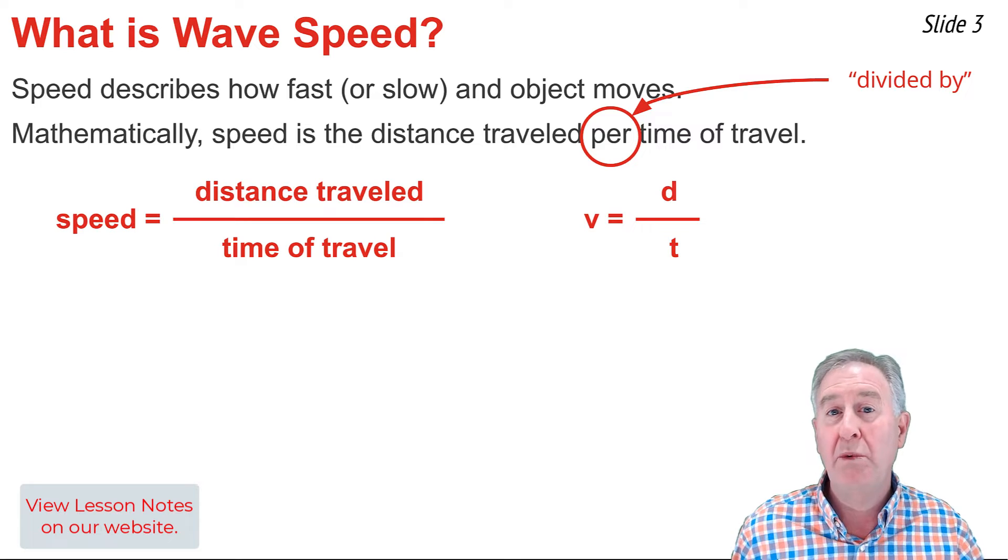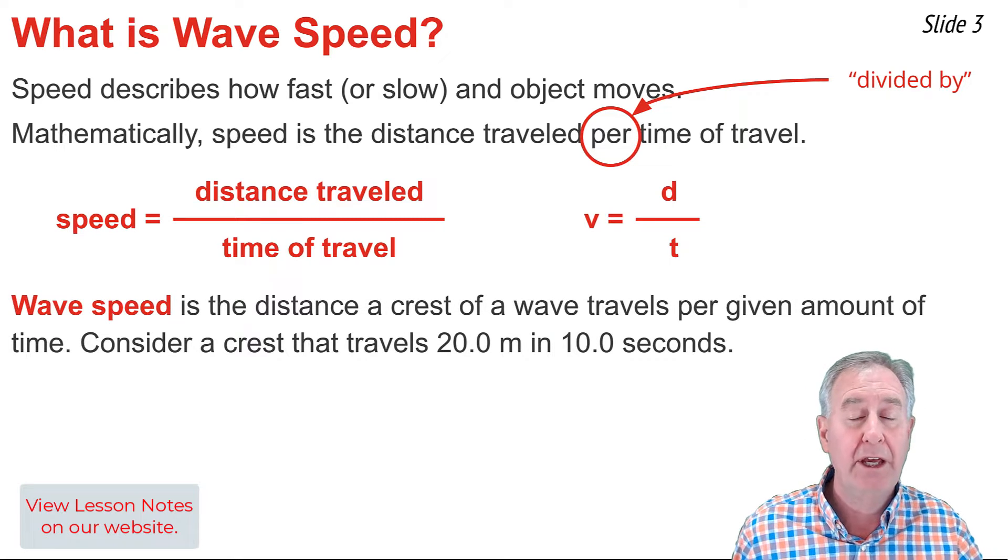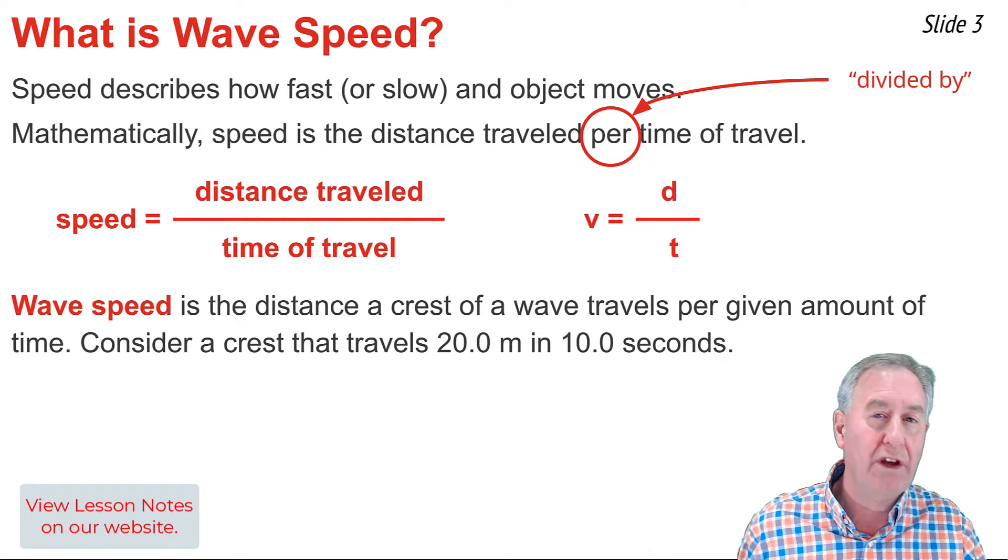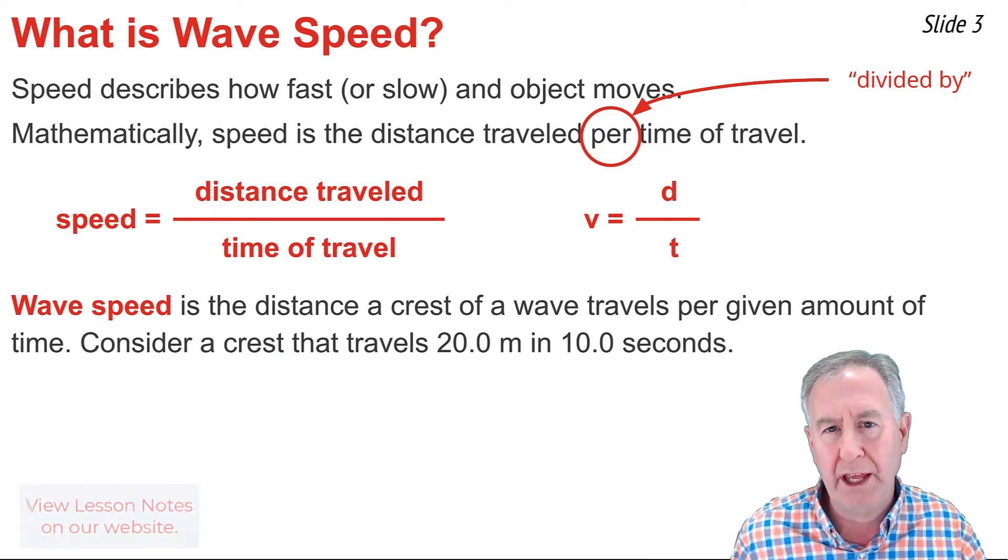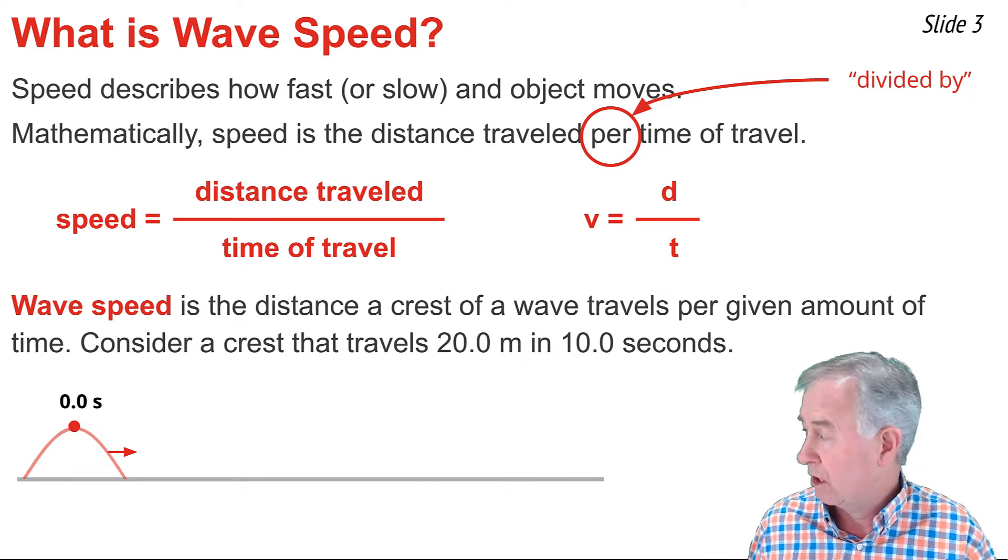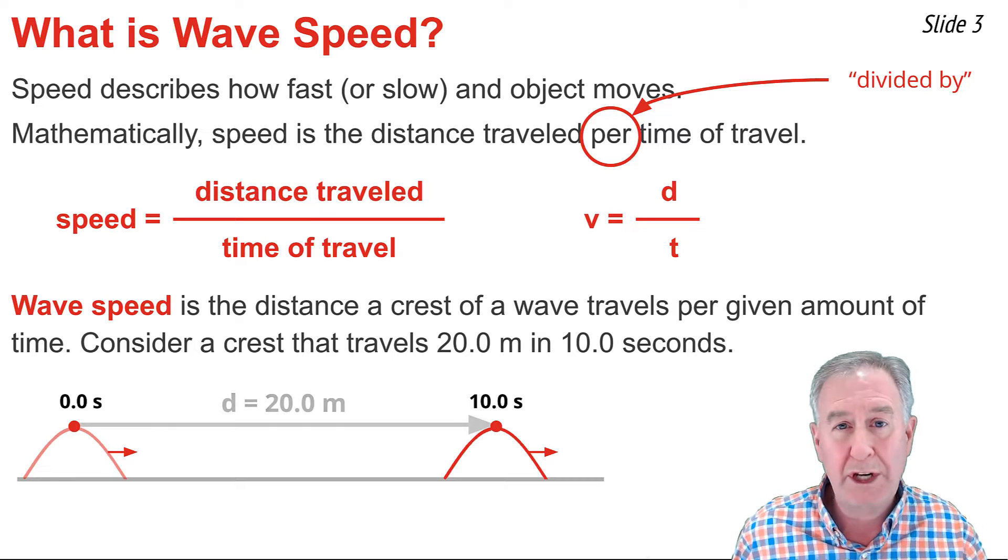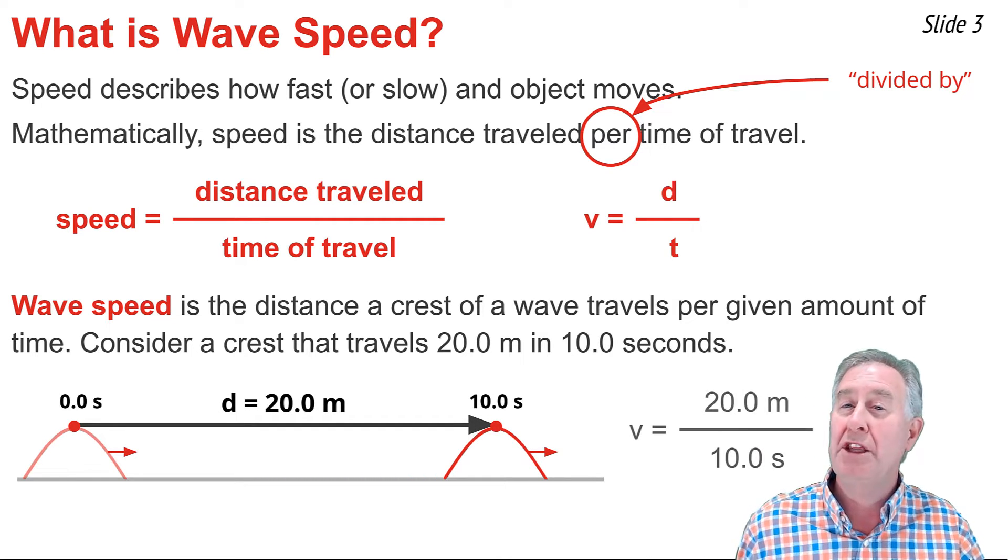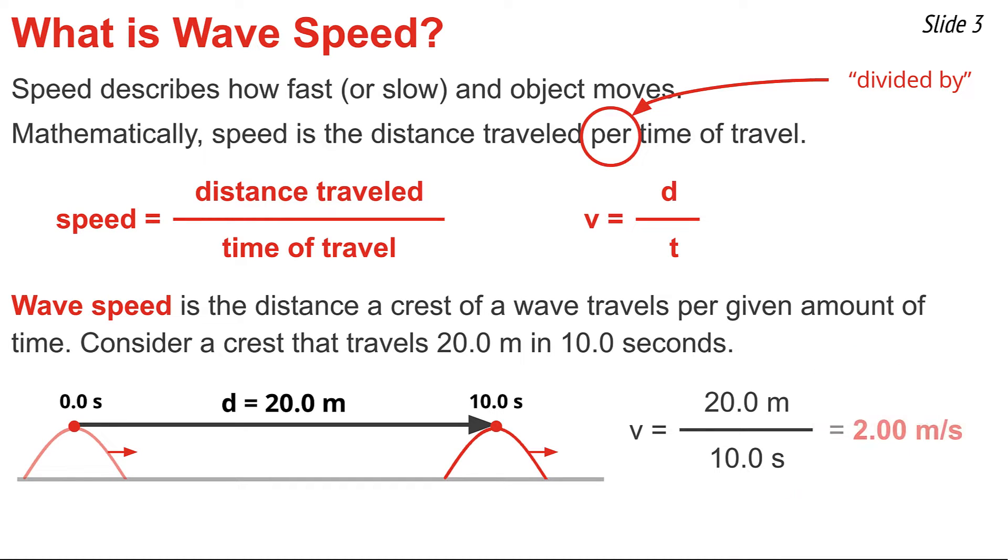For a wave, the speed of a wave is the distance that a wave crest would travel in a given amount of time. It doesn't have to be necessarily the crest of the wave. It could be a trough of the wave, or the compression, or rarefaction, or some recognizable part of the wave. What you would do is look at where the wave is at a given moment in time, and then sometime later, now where is that wave crest? And if it moves 20 meters in 10 seconds, the speed of such a wave would be the 20 meters divided by the 10 seconds, which comes out to be 2 meters per second.